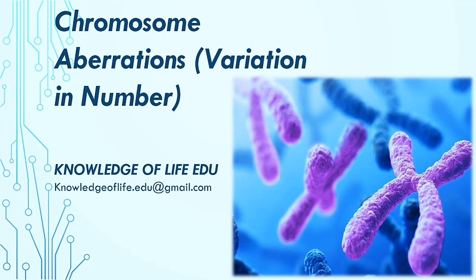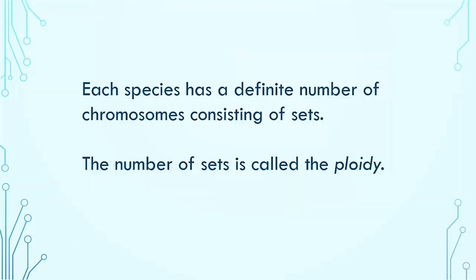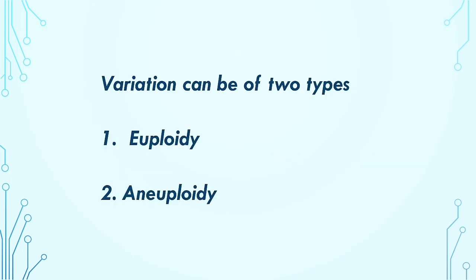We all know that each species has a definite number of chromosomes consisting of sets. An organism may contain one set of chromosomes, which is called monoploid, whereas another organism can contain two sets or more than two sets of chromosomes. The number of sets present is known as ploidy.